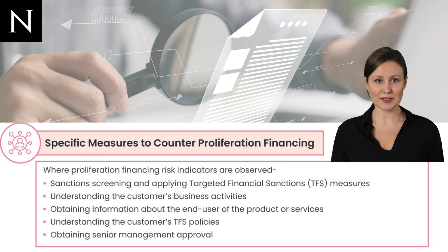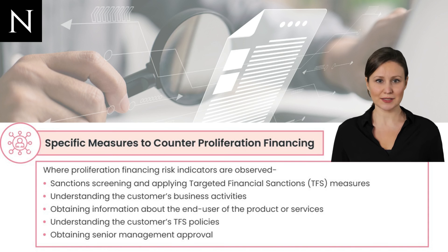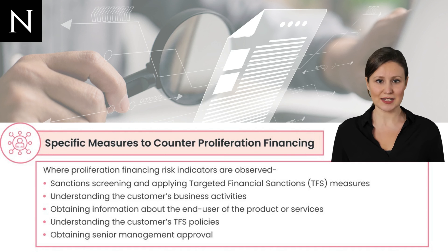Two: applying additional due diligence measures when any proliferation financing-related red flags are observed. These enhanced measures include detailed inquiry about the customer's business activities and source of funds, and understanding the expected end users of any goods or services. Three: regulated entities must also inquire about and check the TFS policy of the customer. Four: approval from senior management must be obtained before conducting any business transaction with high PF risk customers.